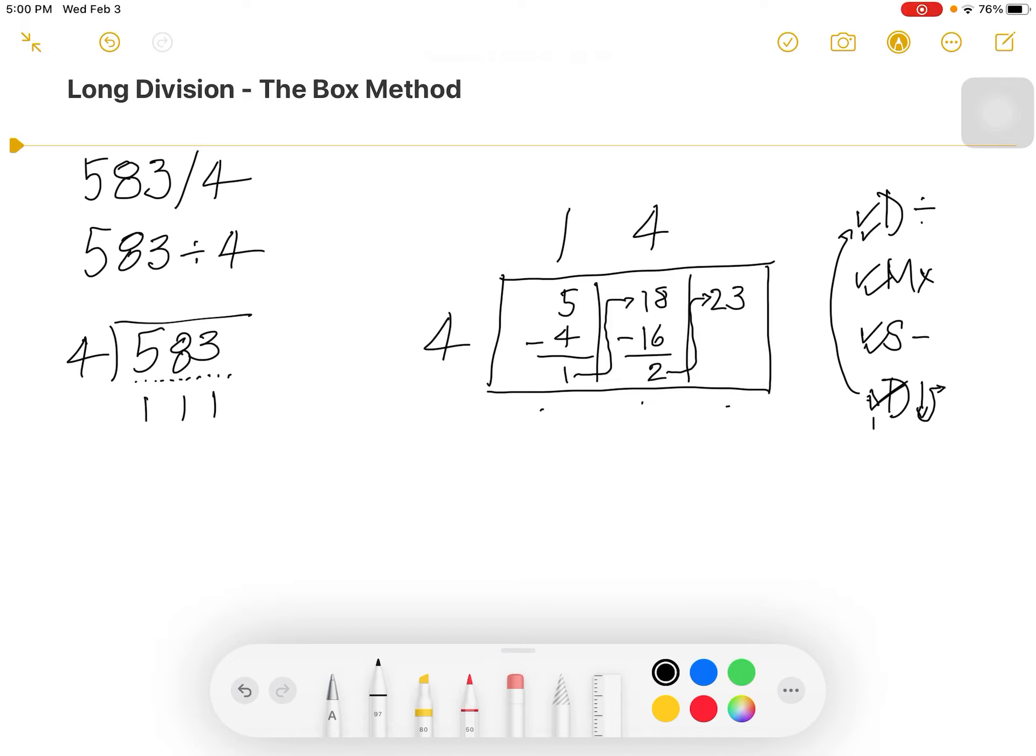Since we dragged a number, we go back and do the process all over again. 4 goes into 23 5 times. 5 times 4 is 20. 23 subtract 20 is 3.